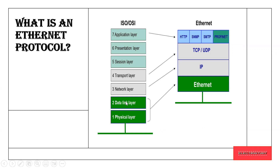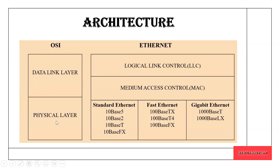Ethernet focuses on the first two layers of the OSI model: the physical layer and the data link layer. In the architecture, the physical layer focuses on hardware elements like cables and network interface cards. The data link layer is subdivided into two layers — logical link control (LLC) and media access control (MAC) — and it focuses on how data is sent from one node to the other.